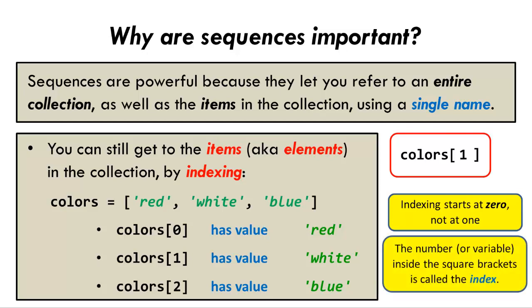Again, the number in the square brackets is called the index, and the things in the sequence are called the items, or equivalently, the elements of the sequence. We use the words items and elements interchangeably.